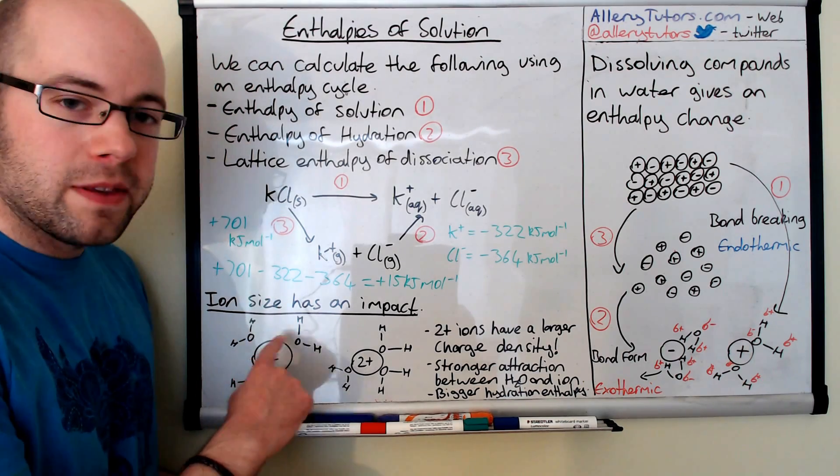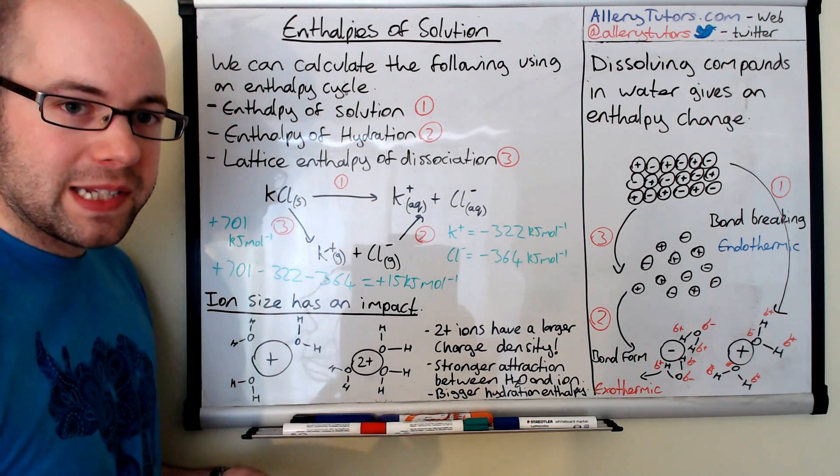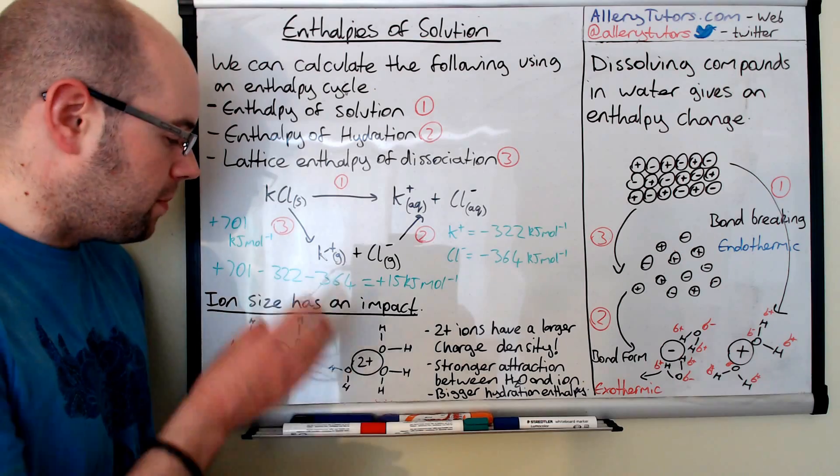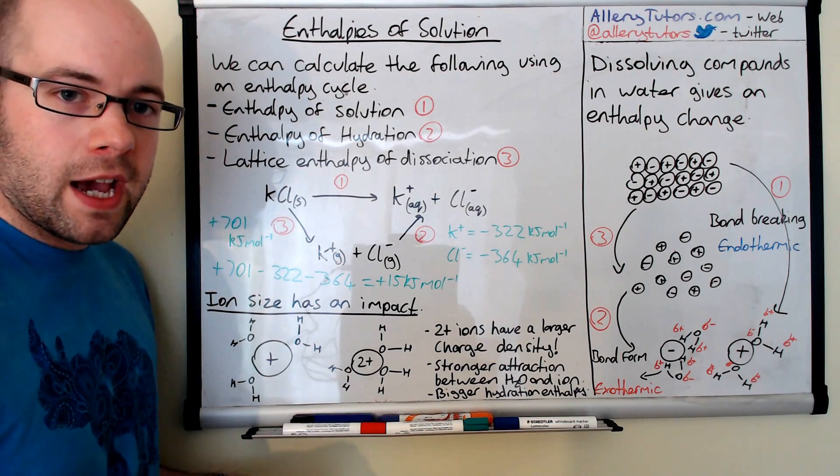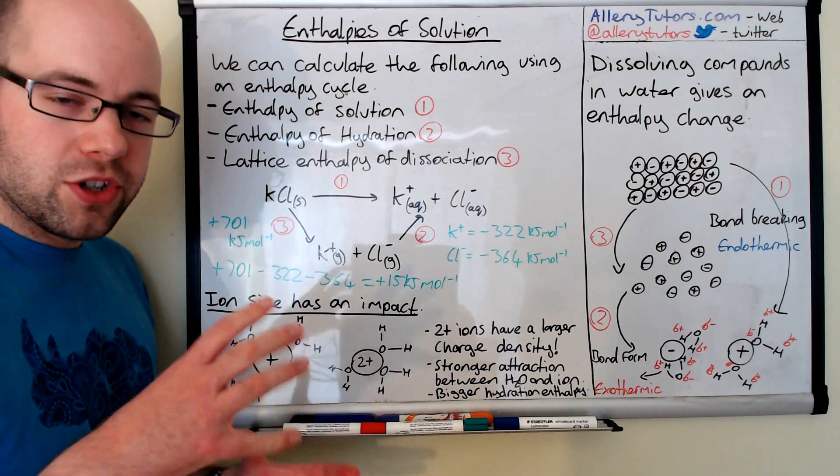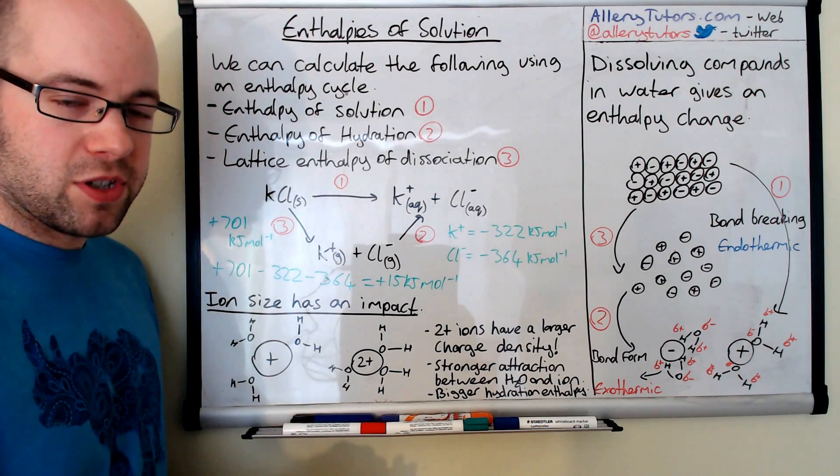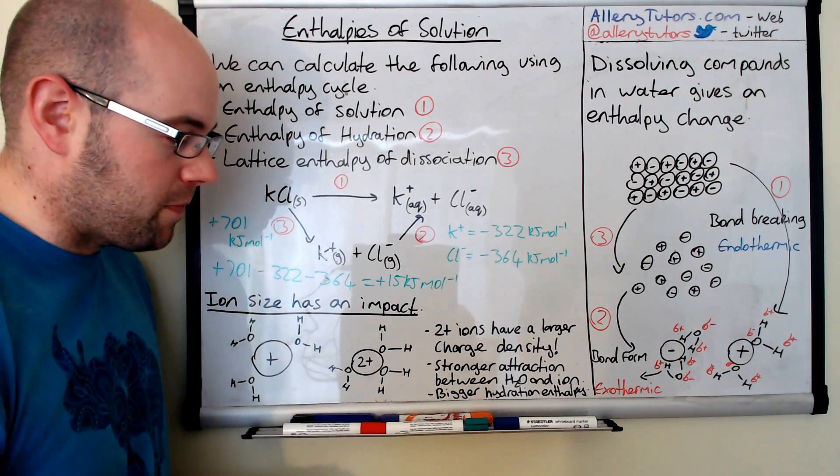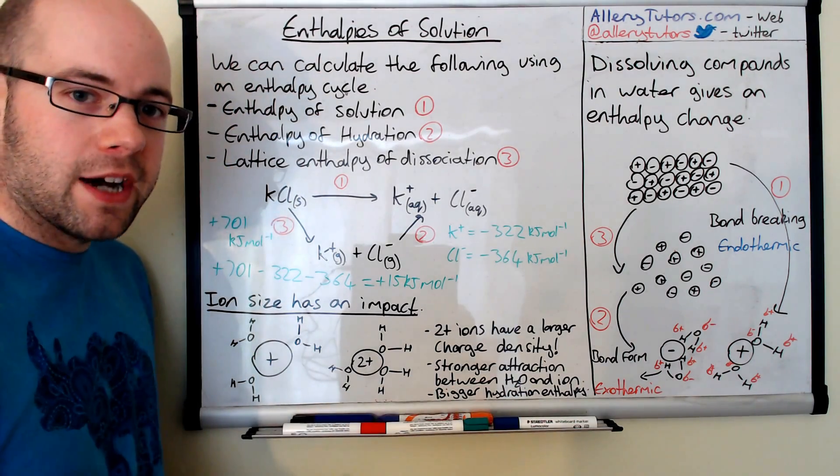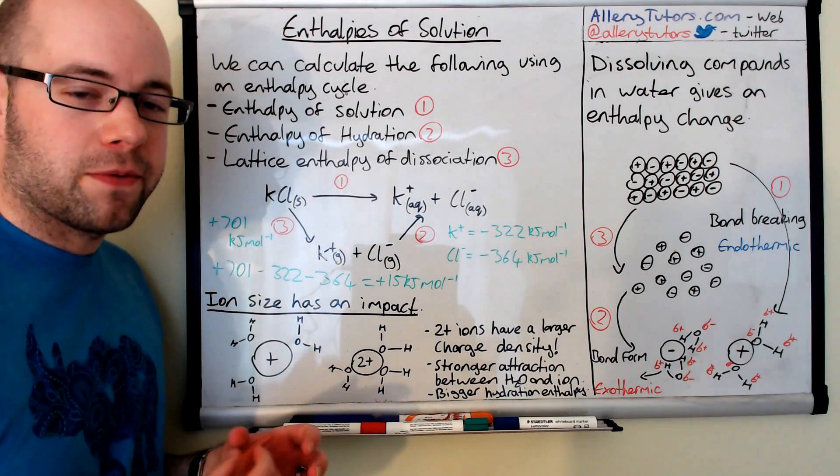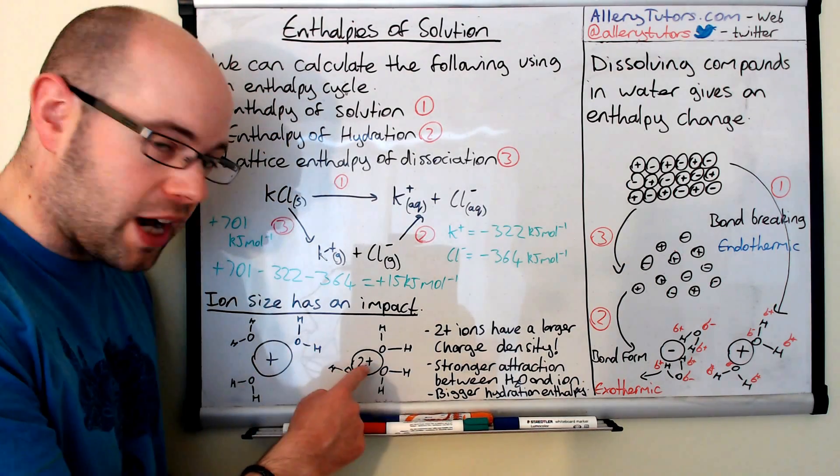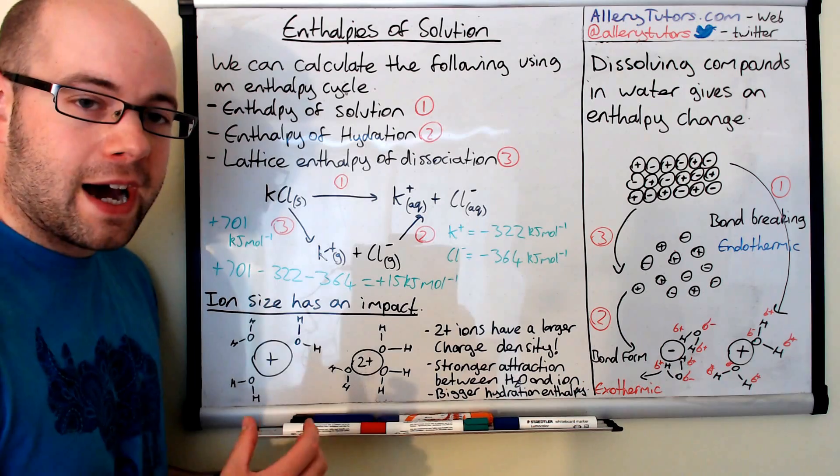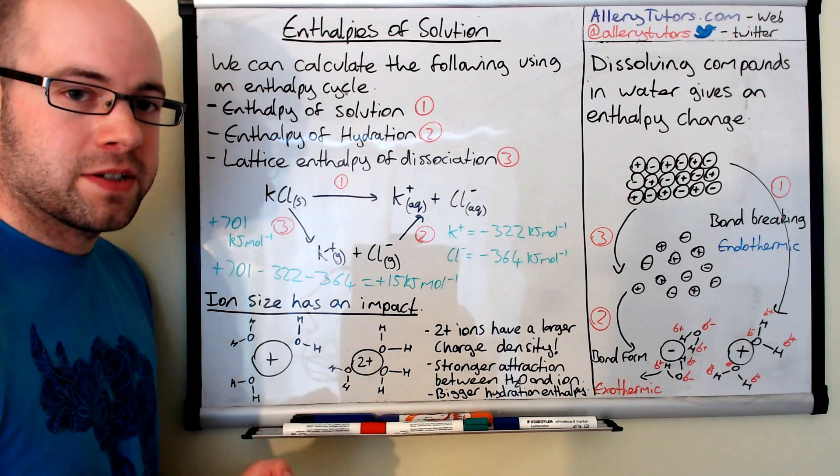Also if we have the same charged ion, for example we might have sodium and potassium. Sodium is a smaller ion than potassium. Both of them are singly positively charged. But because sodium is a smaller ion, the ionic radius is smaller. The charge density is greater because it's a smaller ion, and that has the same effect where it has a bigger hydration enthalpy. So just watch out for that in the exam and take into account charge size, the actual value of the charge, and the ion size as well, the size of the ion.